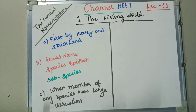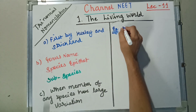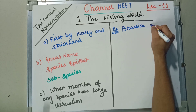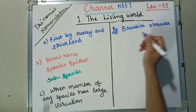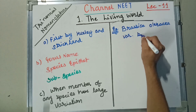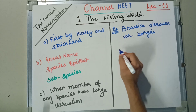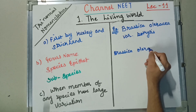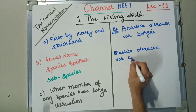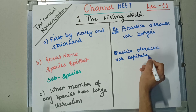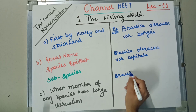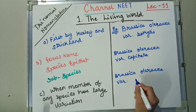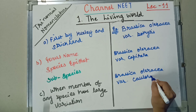Whenever the variation is too much, we use Trinomial Nomenclature. For example: Brassica oleracea var. Botrytis, Brassica oleracea var. Capitata, and Brassica oleracea var. Colorapa.